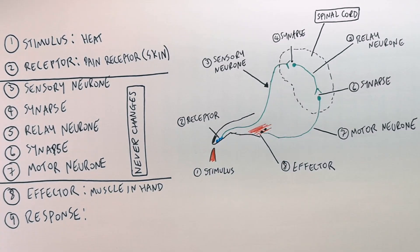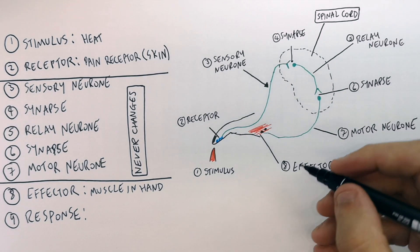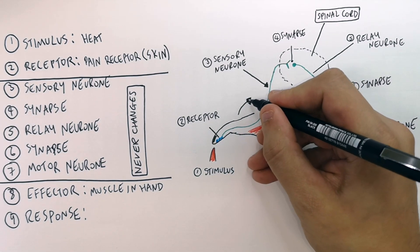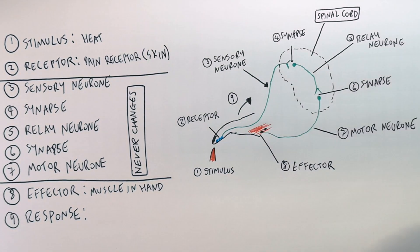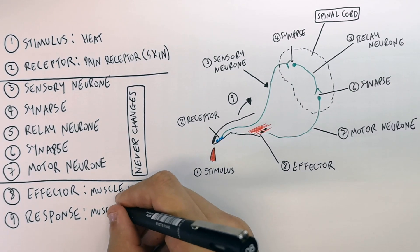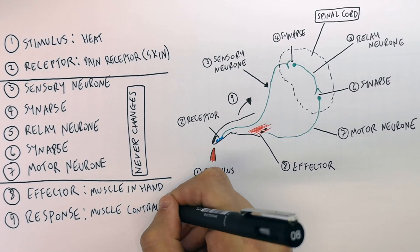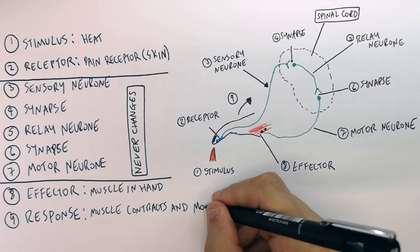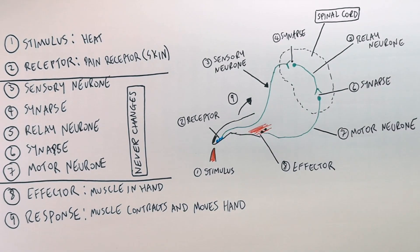This stays the same, but you've got to identify what the effector is. In this case, it's the muscle in the hand. And then the muscle is going to have a response, which is going to be to contract and move the hand away. So the response is the muscle contracts, the effector contracts and moves the hand away. So that is the reflex arc.